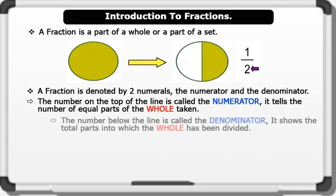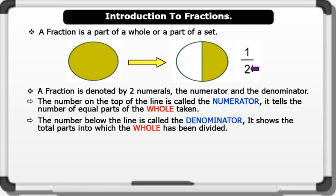The number below the line is called the denominator. It shows the total part into which the whole has been divided. For instance, this whole is divided into four equal parts.